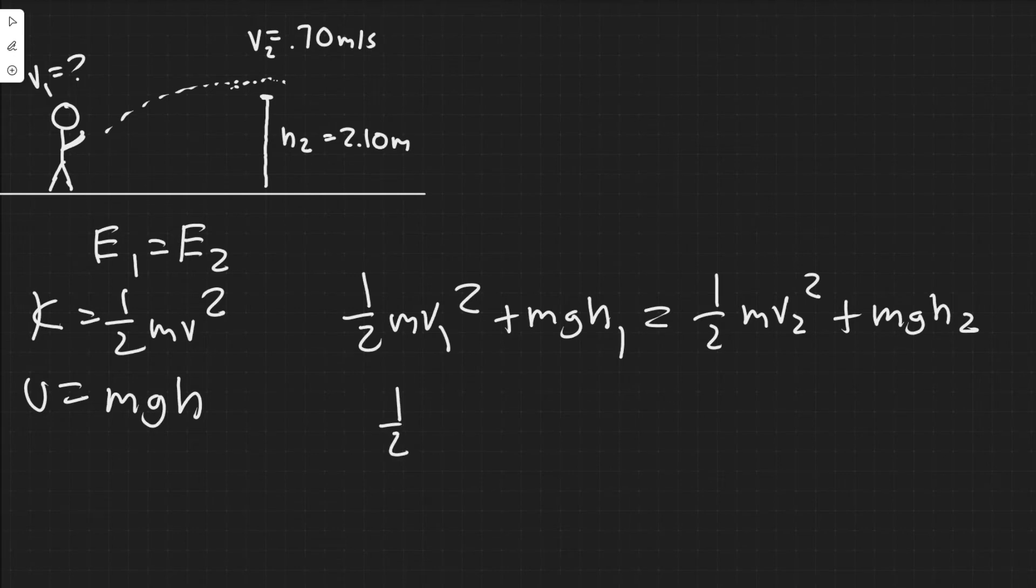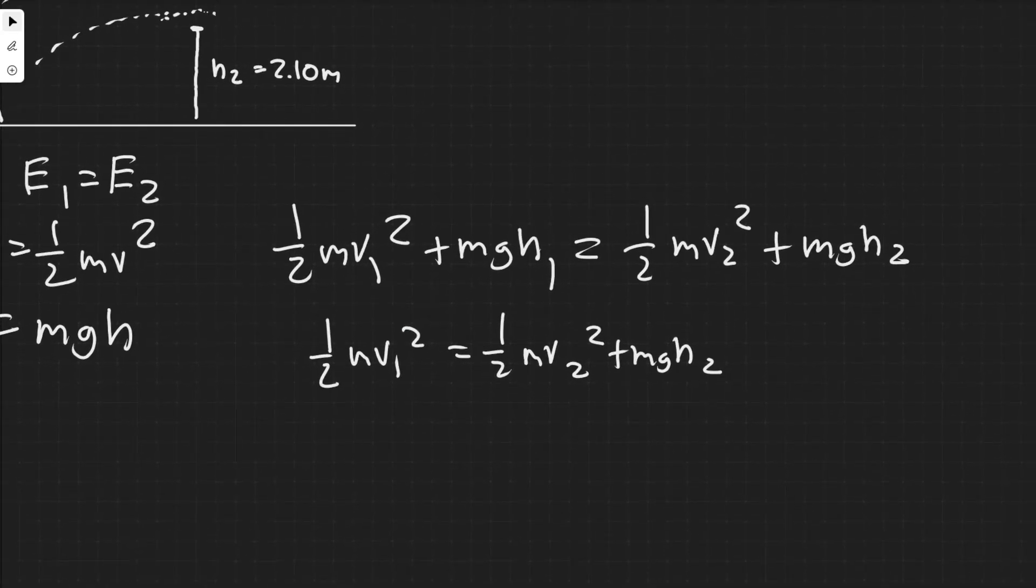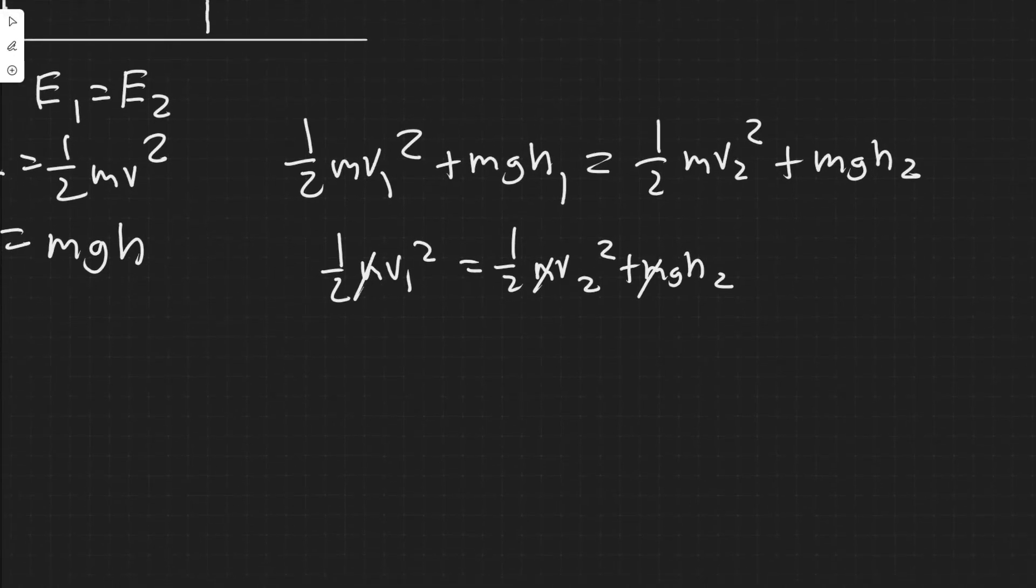So, really, what we have is 1 half MV1 squared is equal to 1 half MV2 squared plus MGH2. Another thing you should notice is we have a mass term in every single one. They're all the same value. Therefore, we can just cancel them out. So, really, we have 1 half V1 squared equals 1 half V2 squared plus GH2.